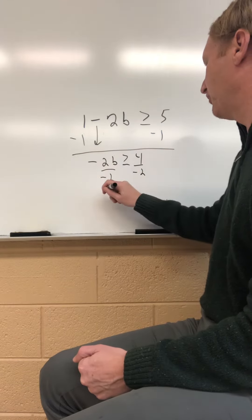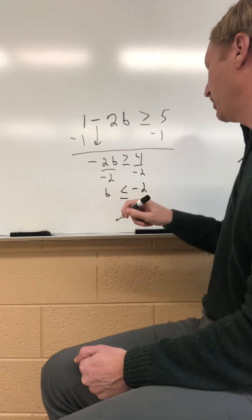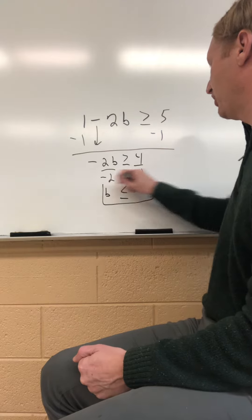And the negative 2s divide out. 4 divided by negative 2 is negative 2. So we get that b is less than or equal to negative 2.